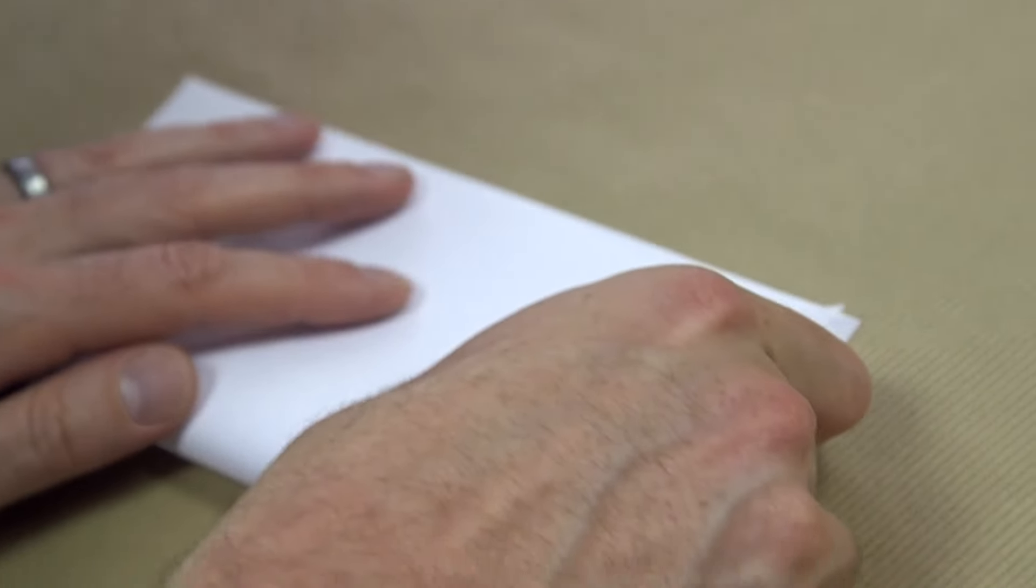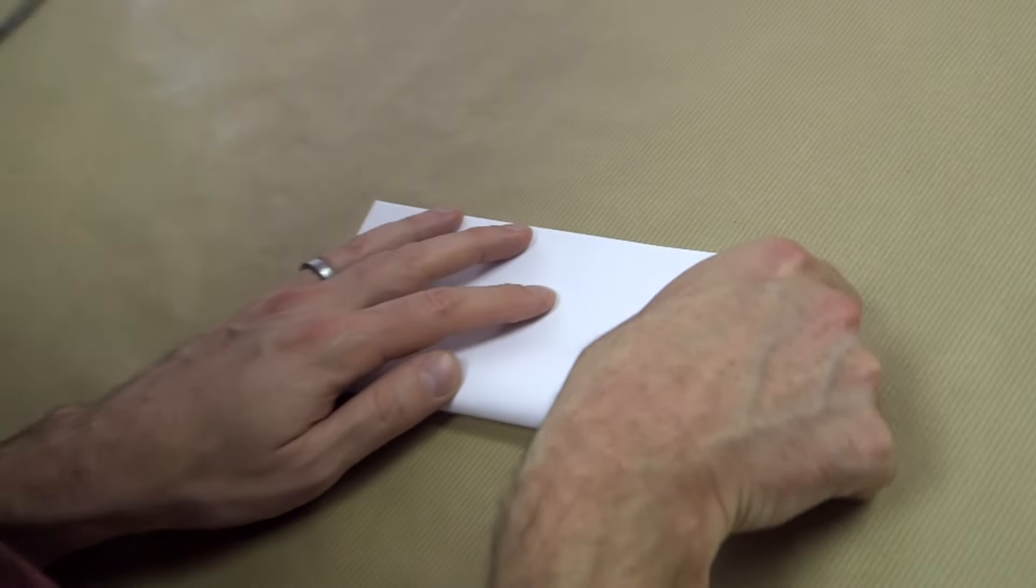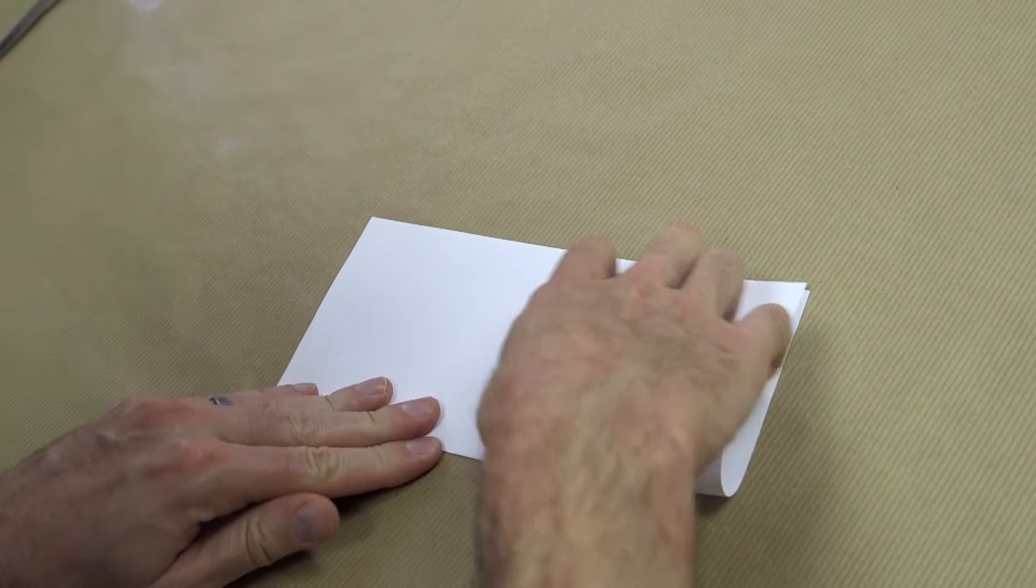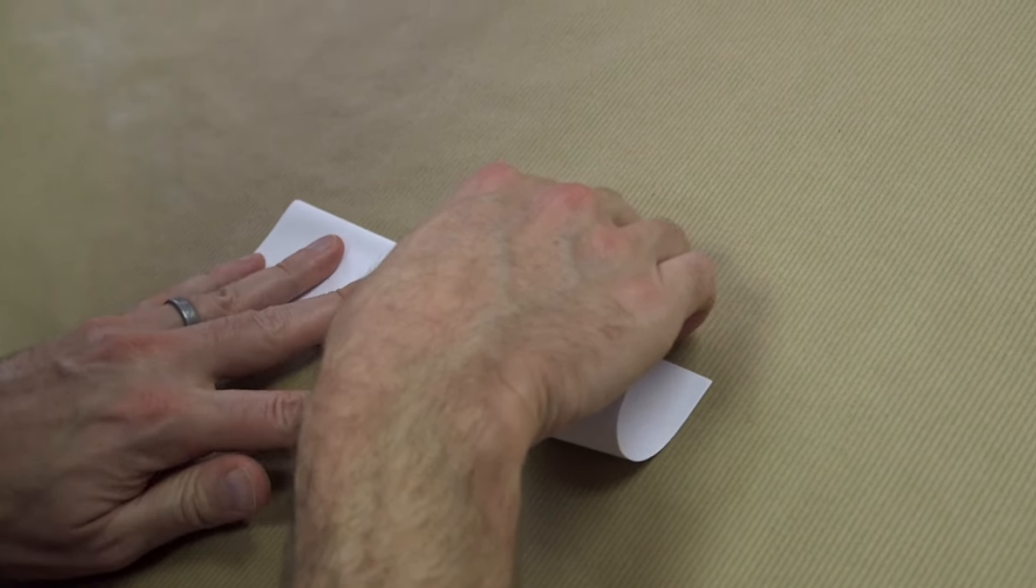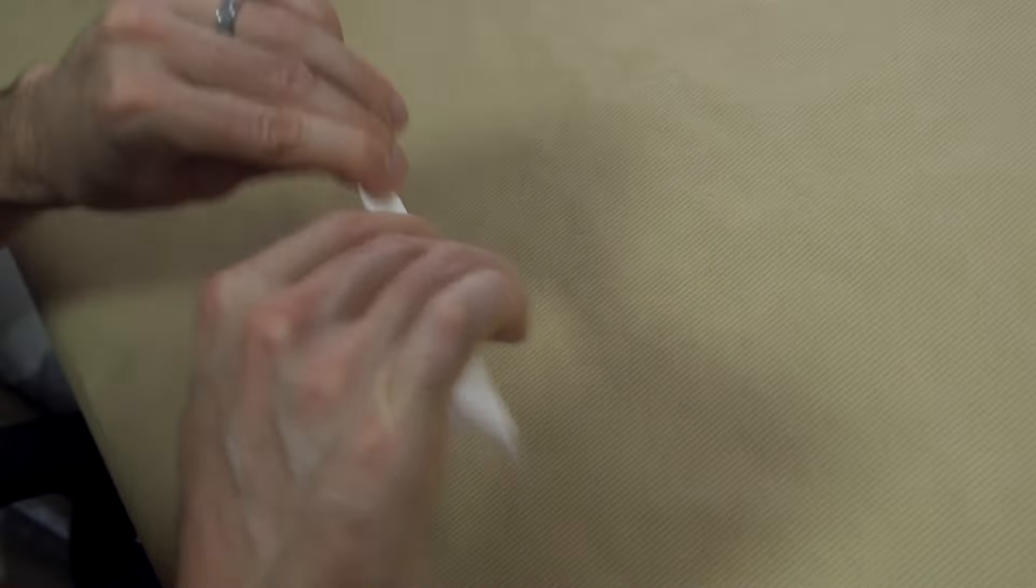So the first step is to fold it in half, whichever way you want. One of the reasons why I love the tetraflexagon is you don't need any glue. If you're making hexaflexagons, you have to get some glue and stick bits together, whereas this one is just folding and cutting.